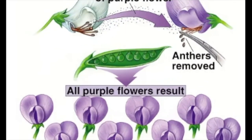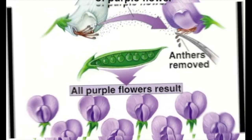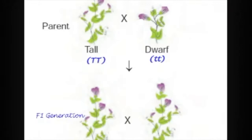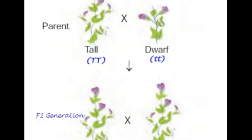In pea plants, the purple flowers are dominant to the white. If one of these purple flowers is crossed with one of the white flowers, the offspring will have purple flowers. This is an example of what we call a cross, and also an example of a Punnett square, which we'll learn more about in our next lesson.